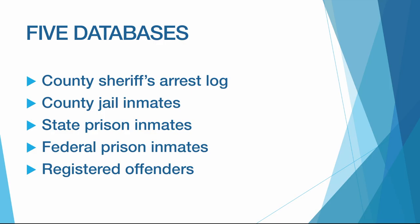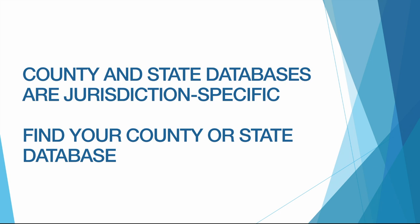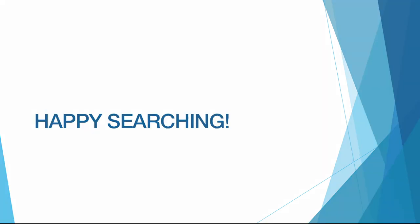To summarize, in this video we covered five different databases that allow us to search for individuals who have come into contact with the various corrections systems. At the county sheriff's level, we looked at jail booking information and the jail population. At the state and federal levels, we searched for inmates who are either currently serving time or who did so previously. And we looked at the offender registry, which you can search by name or geographically, for individuals convicted of certain violent, sex, or drug crimes. The county and state databases are specific to those jurisdictions, so you need to find the respective database you want to use. Remember that these databases will work differently from one case to the next. This tutorial was filmed in June of 2020, so because of how often corrections records are updated, your results may be different from mine by the time you view this video. Whenever you view this video, I wish you happy and productive searching.